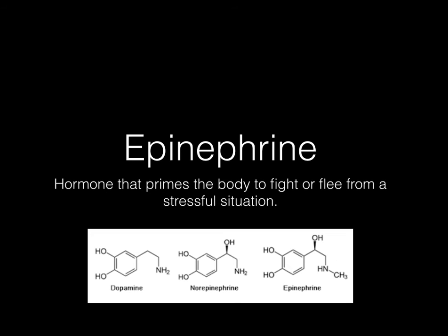Epinephrine is a hormone that primes the body to fight or flee from a stressful situation. This is going to be a neural control — it's going to be controlled by the central nervous system, where it tells the body to send out these hormones in order to help us survive.